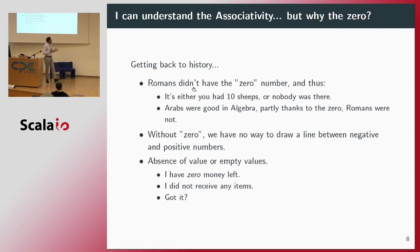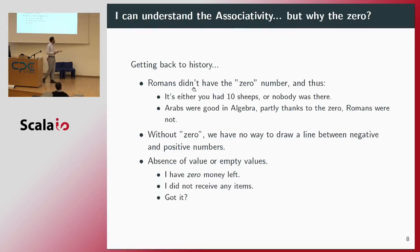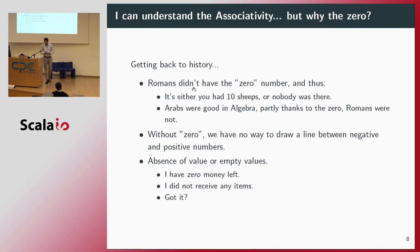I think we all understand what associativity is, but what is the identity? When I went back through history, I found that the Romans, even though they produced lots of great things, had no zero number. And the thing is that when you are counting sheep, for example, it's either we had 10 sheep or nobody was there. We didn't have a zero as we know it today. The zero is the law, if I might say.